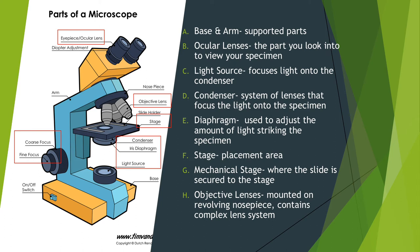The base and the arms support all parts of the microscope. The ocular lens is the part of the microscope that you view your specimen through. The light source focuses light onto the condenser, which uses a system of lenses to focus light onto the specimen. You can use the diaphragm to adjust the amount of light striking the specimen.